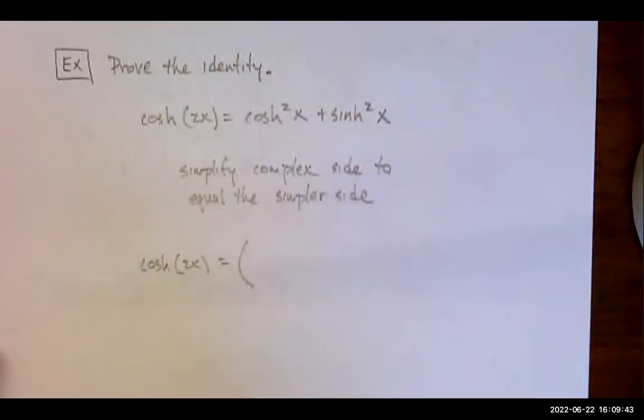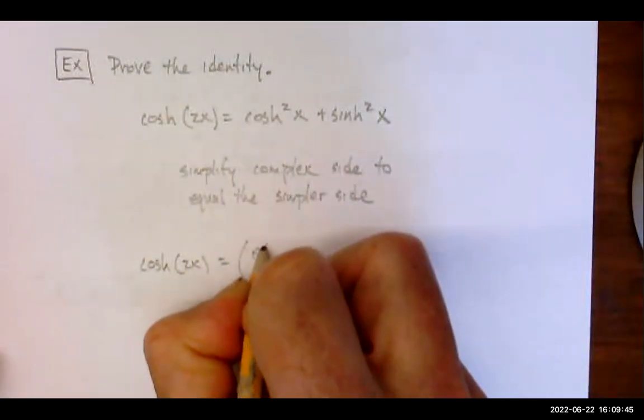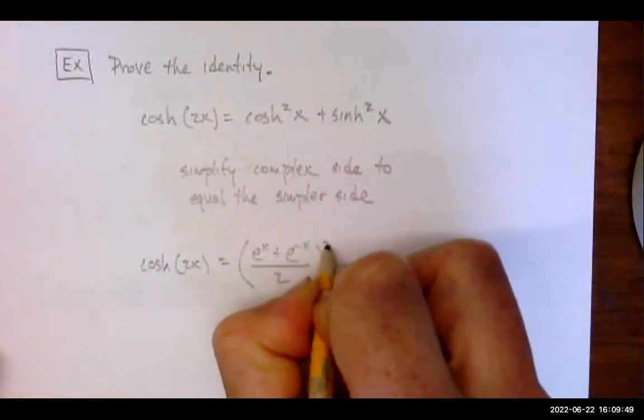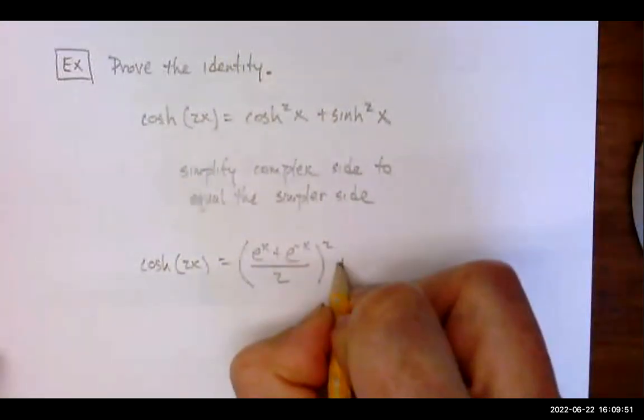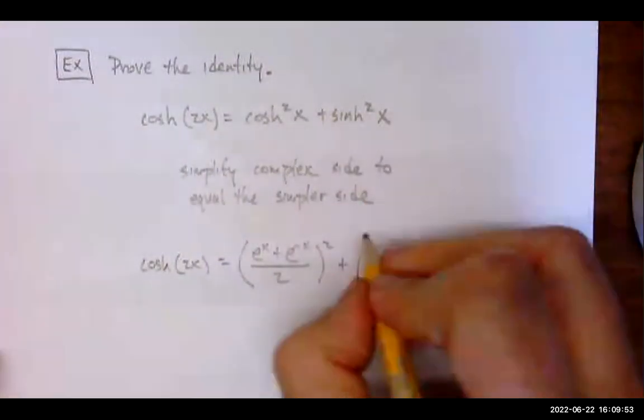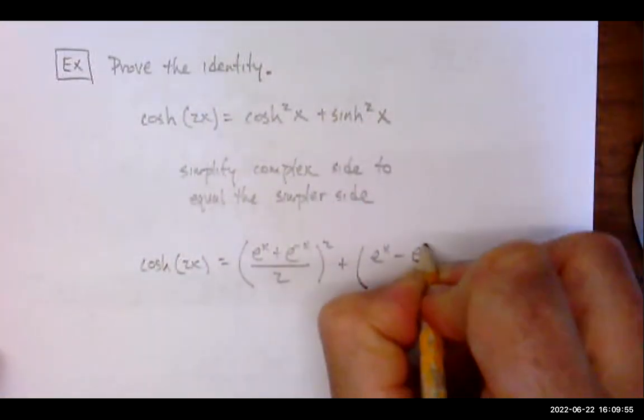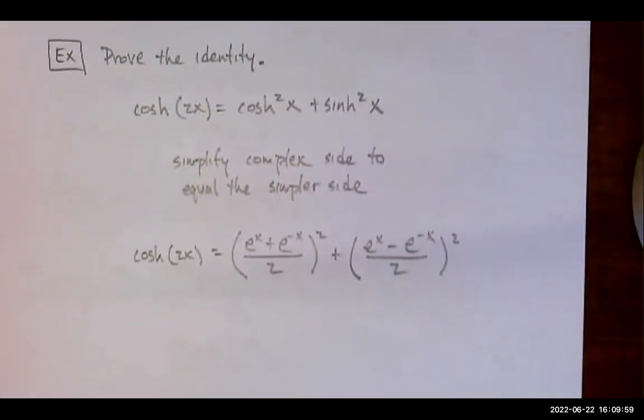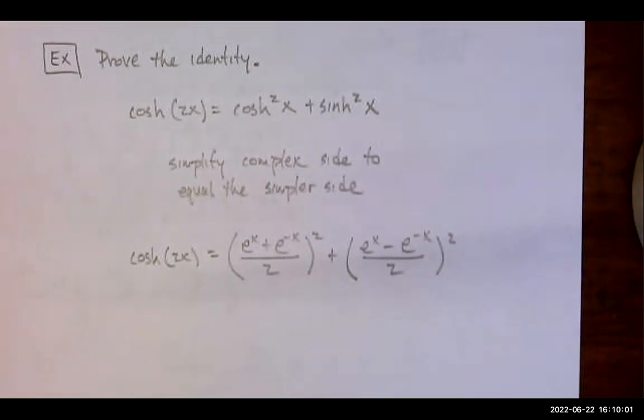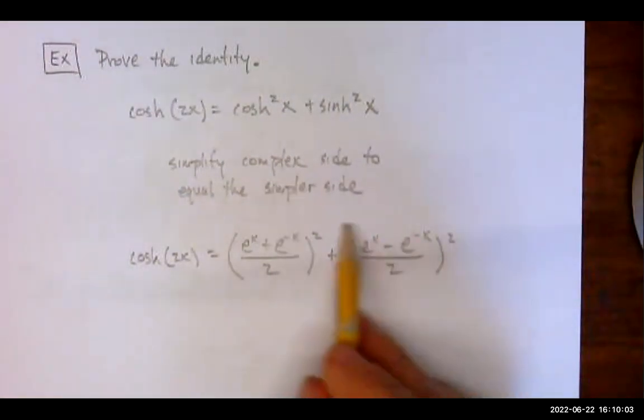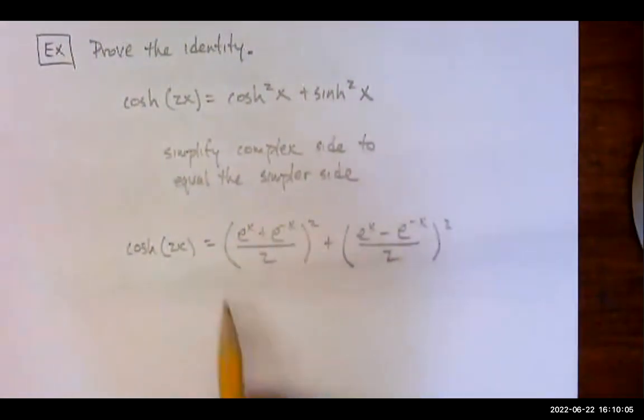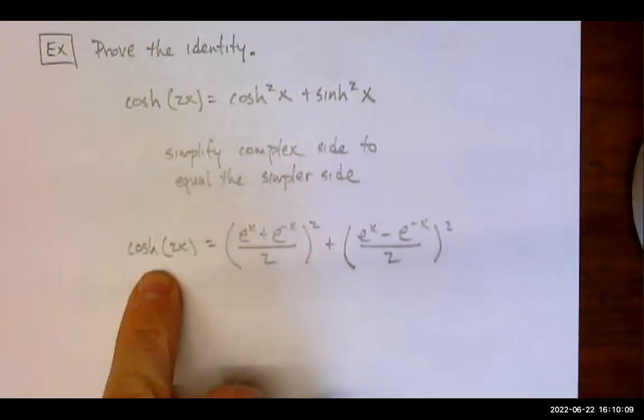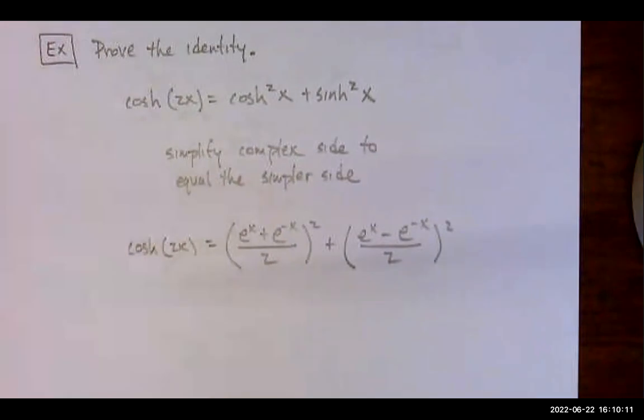So cosh squared x is e to the x plus e to the negative x over two, and that gets squared, plus sinh x, e to the x minus e to the negative x over two, that gets squared. Okay, so I'm just going to work with this, simplify it, multiply it out, maybe combine some fractions together, and hopefully it just works out to be exactly that, and it should.